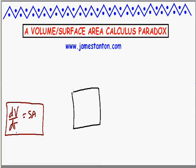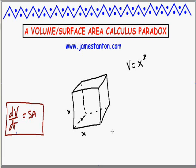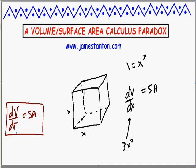Let me draw a cube. Here's a lovely cube. Let's call the side length x. We know the volume is x³. Now, if I take the derivative of this with respect to x, our work has now shown there should be surface area. The trouble is the derivative of x³ with respect to x is 3x². And what's the surface area of a cube? Well, there are six faces of x² — the area is 6x². A mismatch. This is not working. What's going on? There's my little paradox.